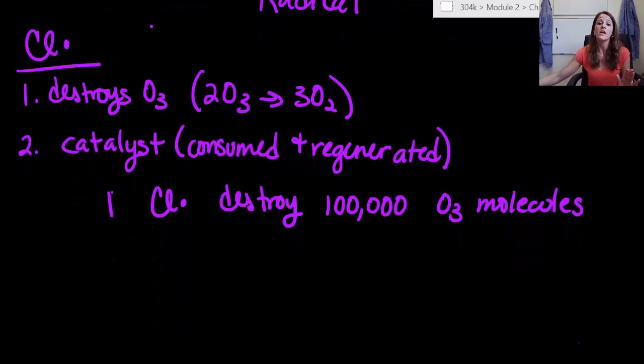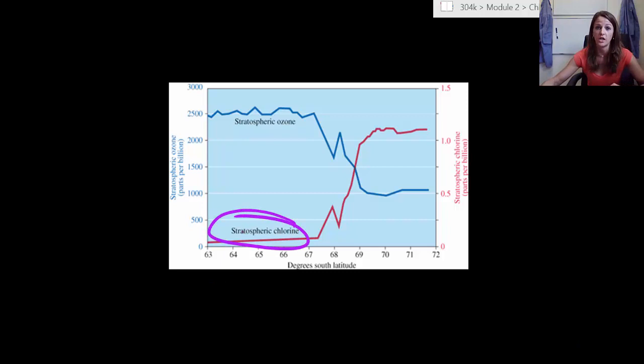In fact, let me show you this graph, which is called the smoking gun. People started measuring out, like I told you, the ozone concentrations. But they also started measuring out our stratospheric chlorine concentrations. So they were measuring this right here, our concentration.